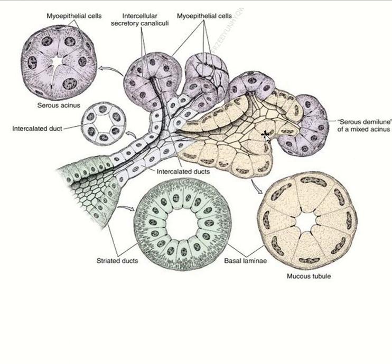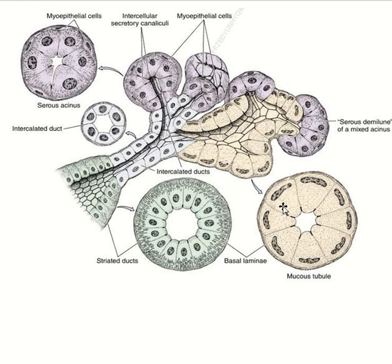This is the mucous acini, and in the cross section of the mucous acini you see that the cell contains a flattened nucleus which is peripherally placed, due to accumulation of mucus in the apical region that pushes the nucleus to the periphery.